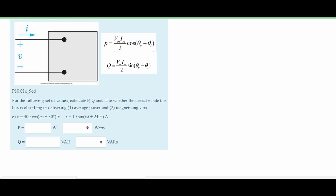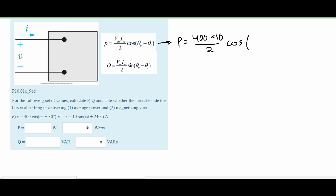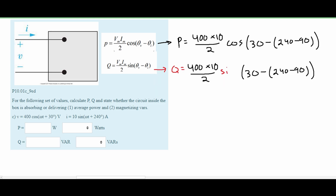For Problem 4, we have our voltage and our current. Our current is in sine, so we are going to have to convert it — we subtract 90 degrees from the angle — and plug them into the power and magnetizing formulas. From this we get that our power is approximately negative 1000 watts, which is being delivered because it's negative. For Q (the magnetizing), we get approximately negative 1732 VARs, which is also being delivered because it is negative.